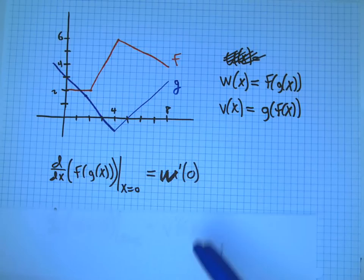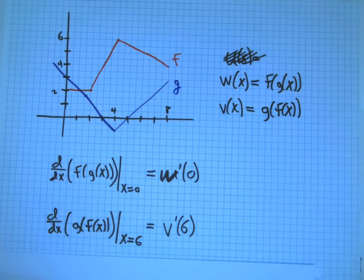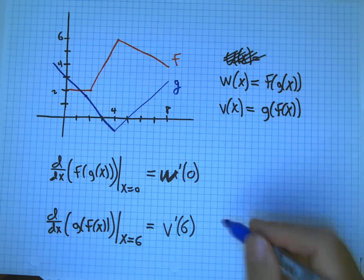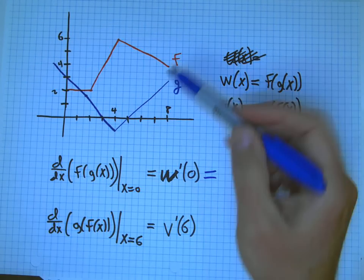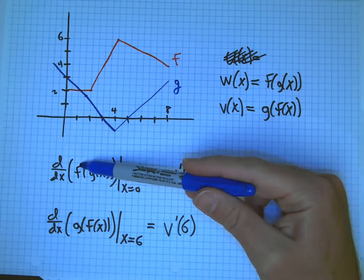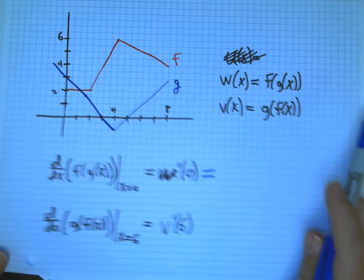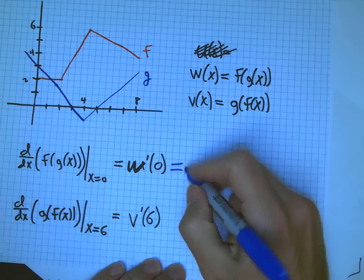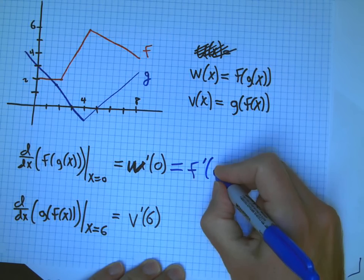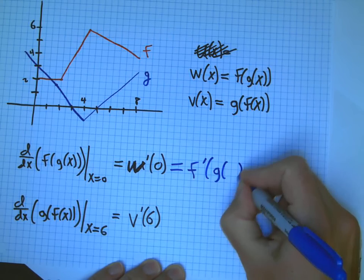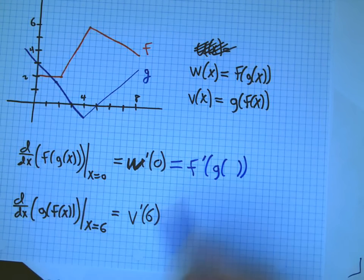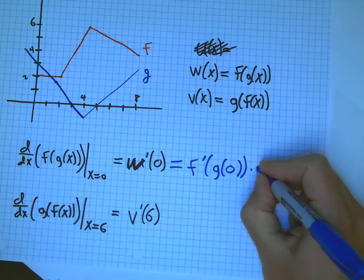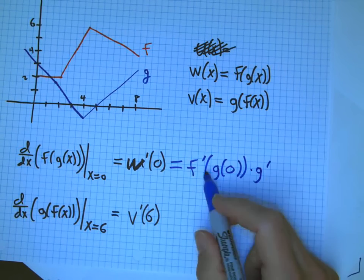But let's see what happens here. The derivative of f composed of g, we just write down the chain rule, and we just have to carefully see how the process works. It's the derivative of the outer, evaluated at the inner. And now, we're not going to do this for a general x, we're going to do this for x equals 0. And so, we just plug in 0 everywhere. So, it's the derivative, it's f'(g(x)), with x plugged in to be 0, times g'(x), with x plugged in to be 0.